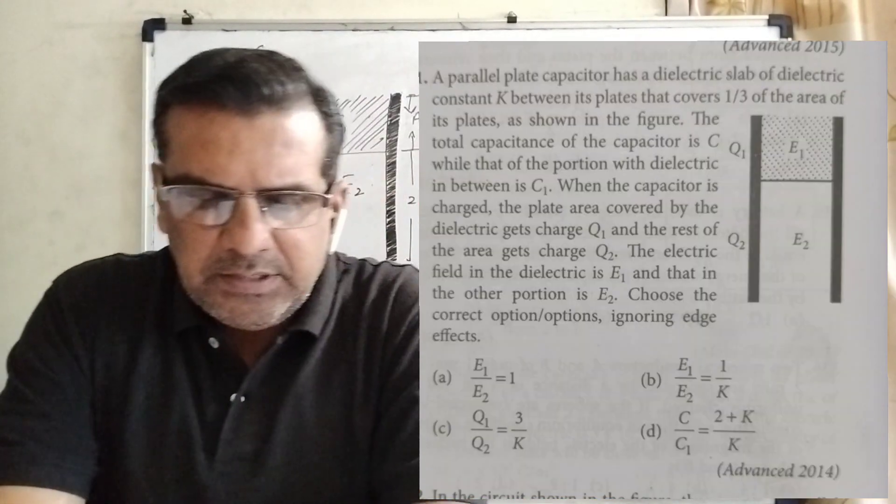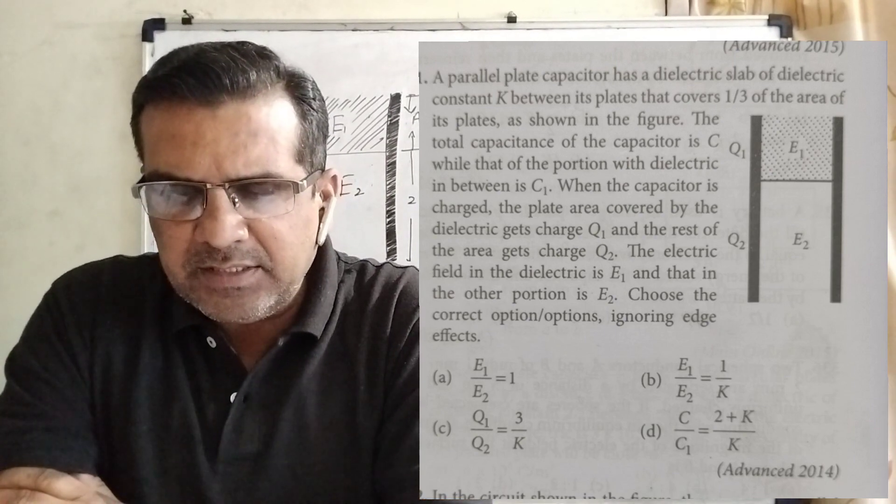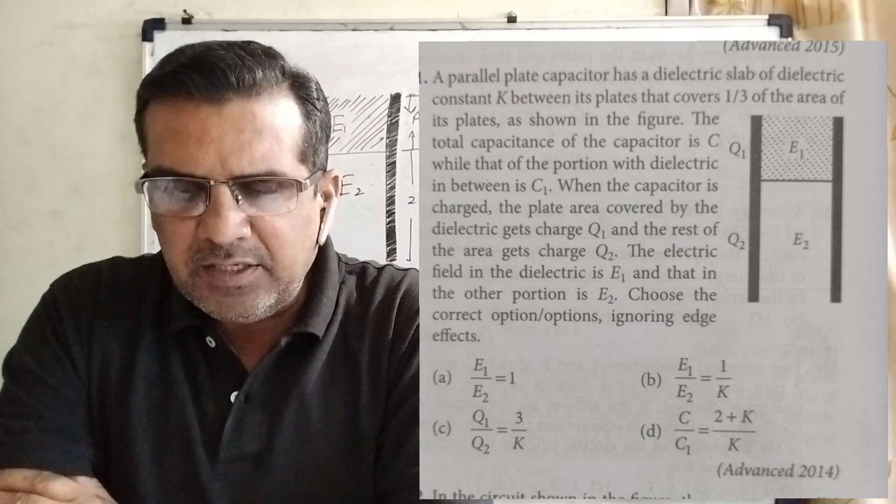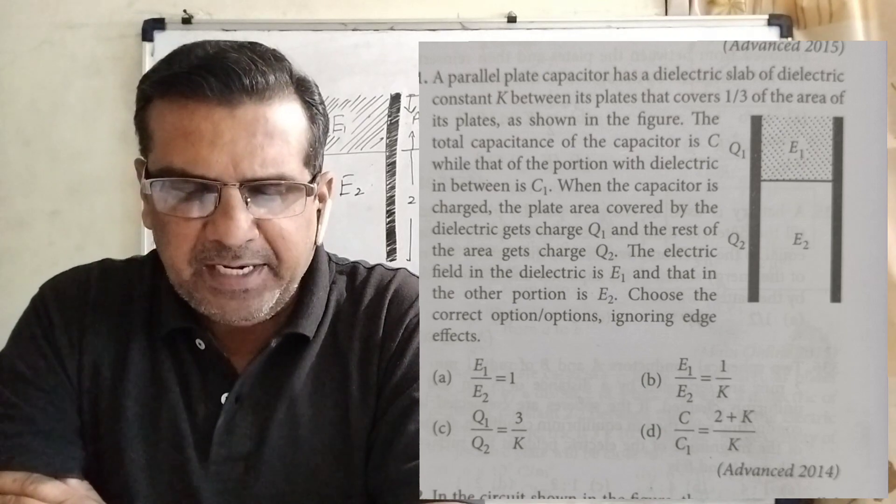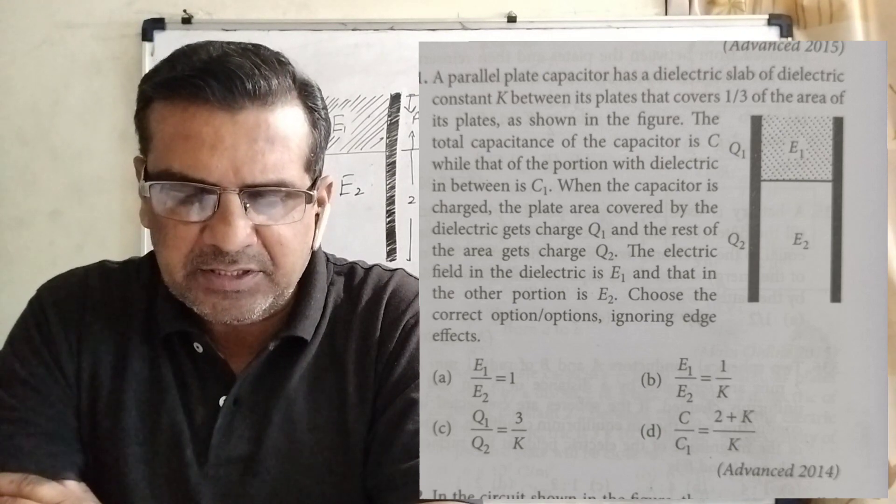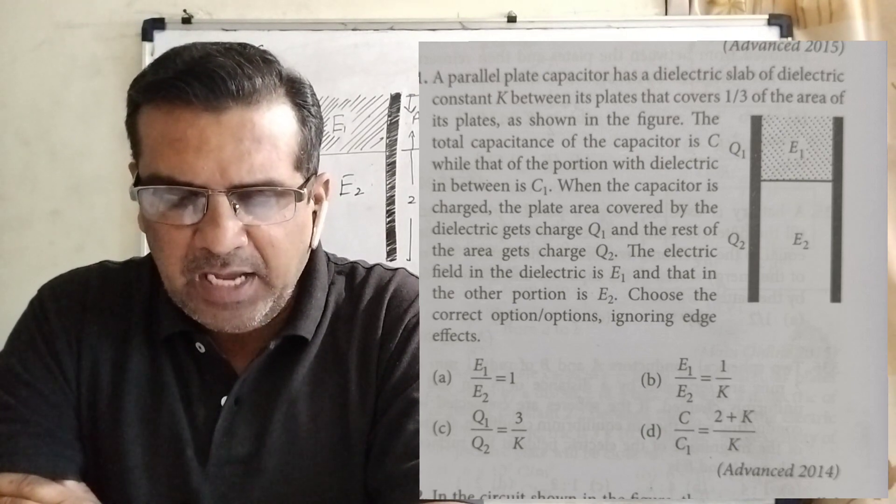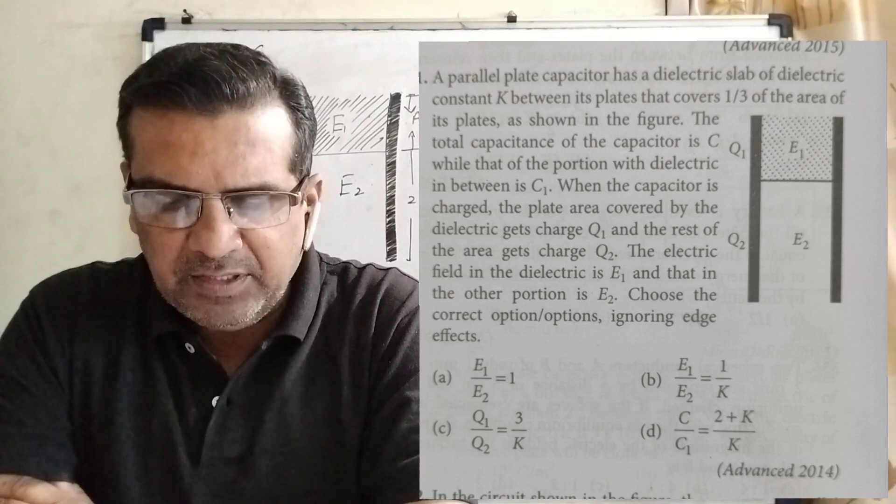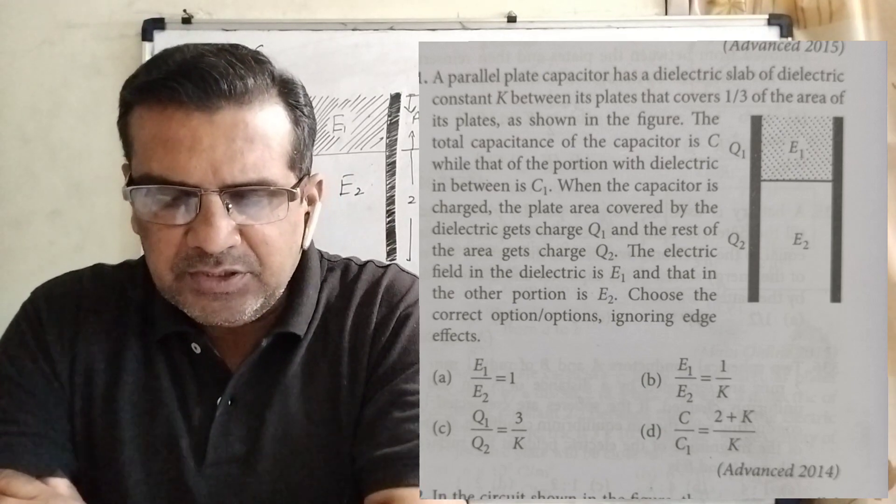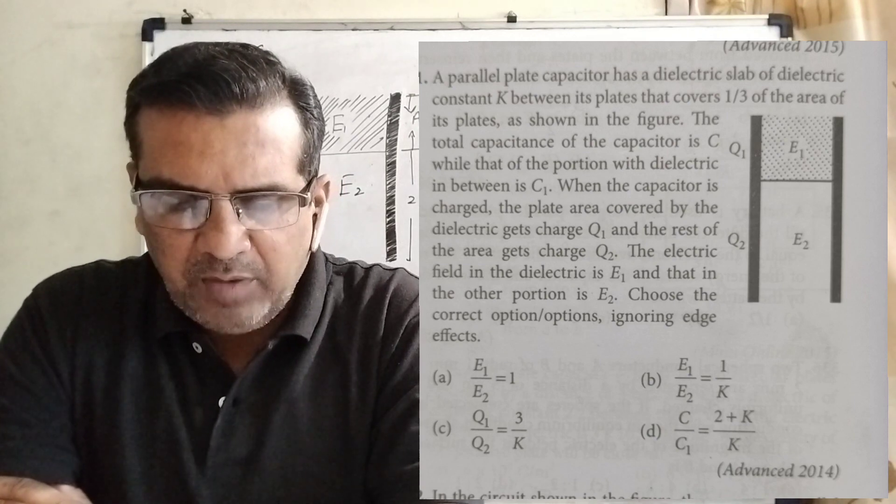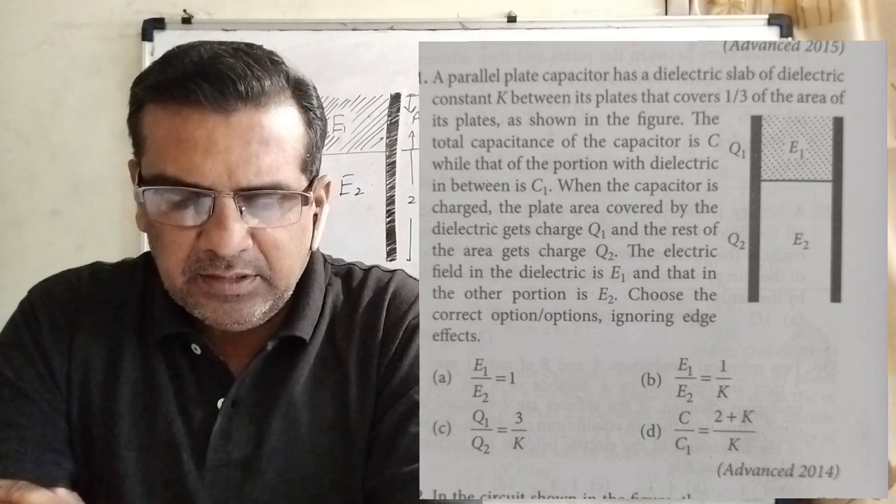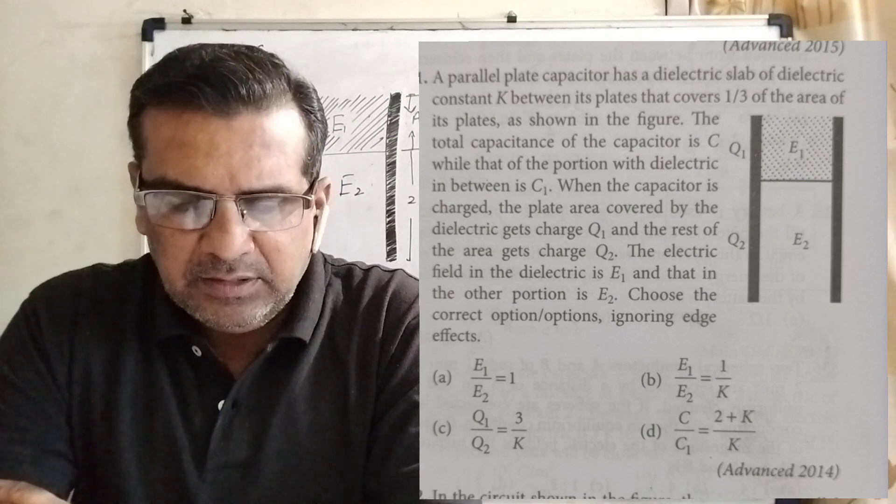Here what the question says: A parallel plate capacitor has a dielectric slab of dielectric constant K between its plates that covers one-third of the area of its plates. According to the figure, the total capacitance of the capacitor is capital C, while that of the portion with dielectric in between is C1. When the capacitor is charged, the plate area covered by the dielectric gets charge Q1 and the rest of the area gets charge Q2. The electric field in the dielectric is E1 and that in the other portion is E2.